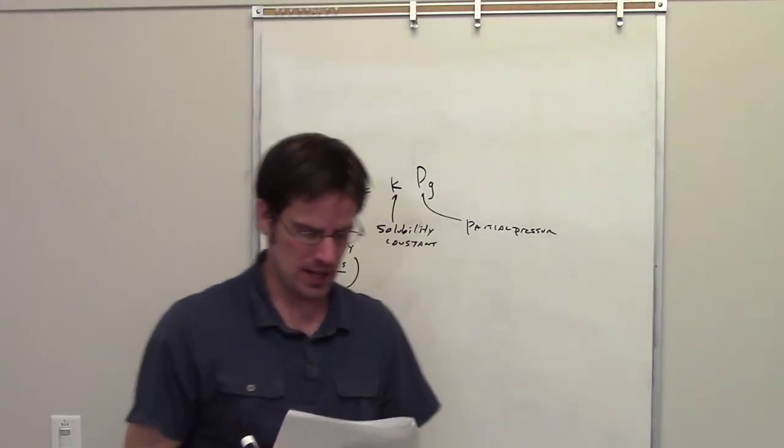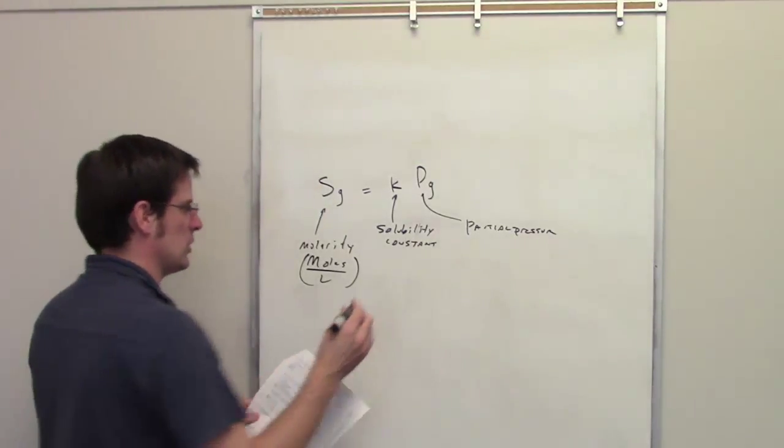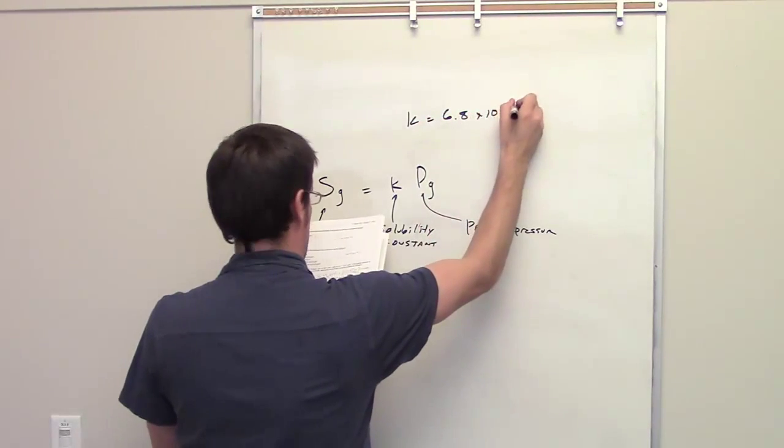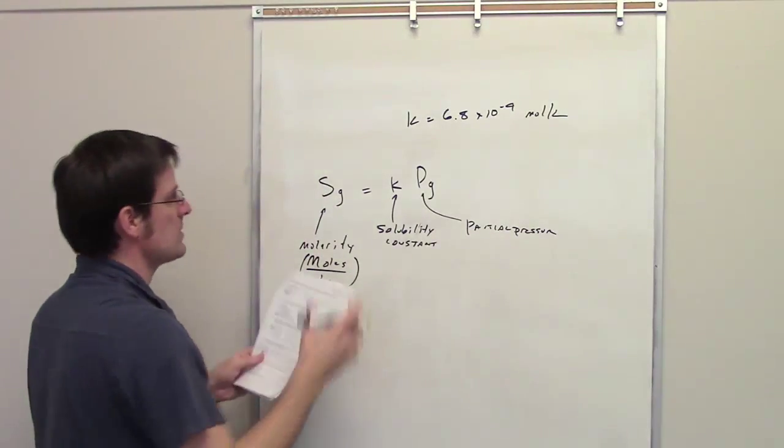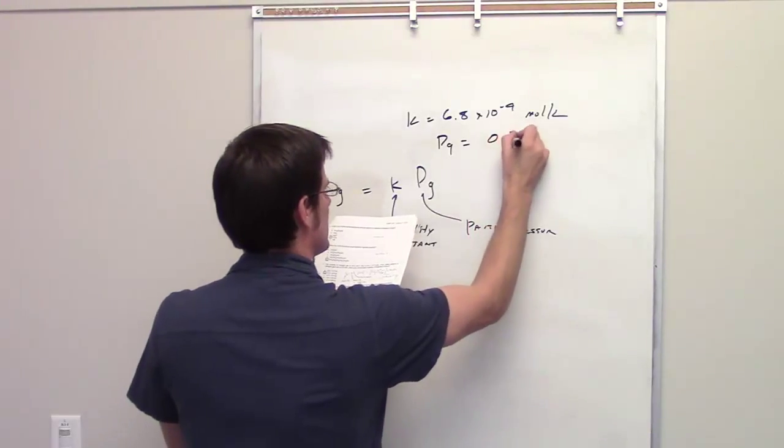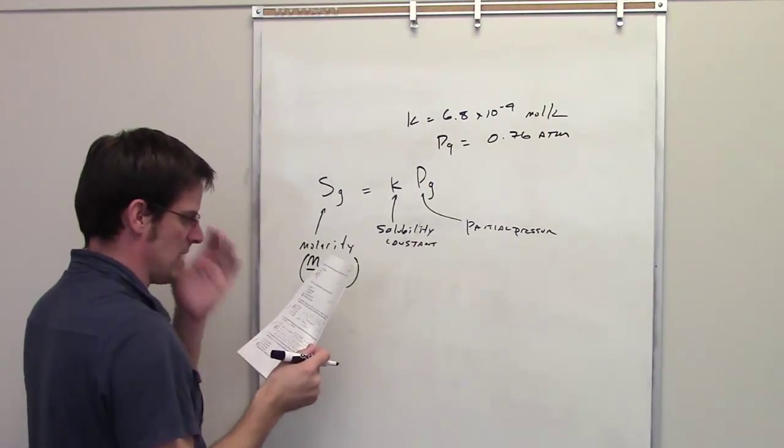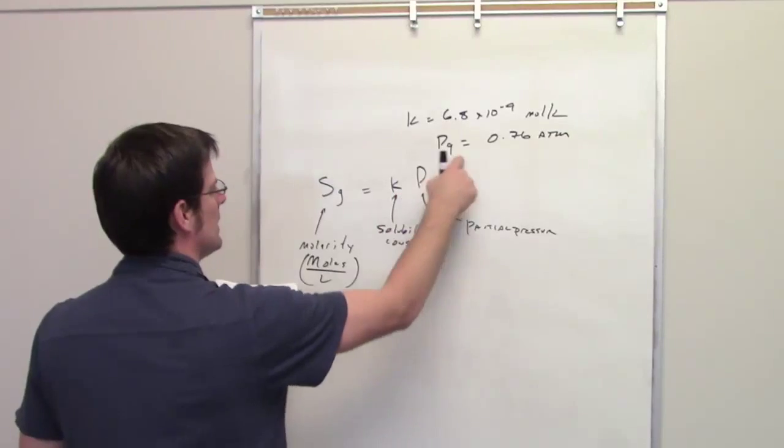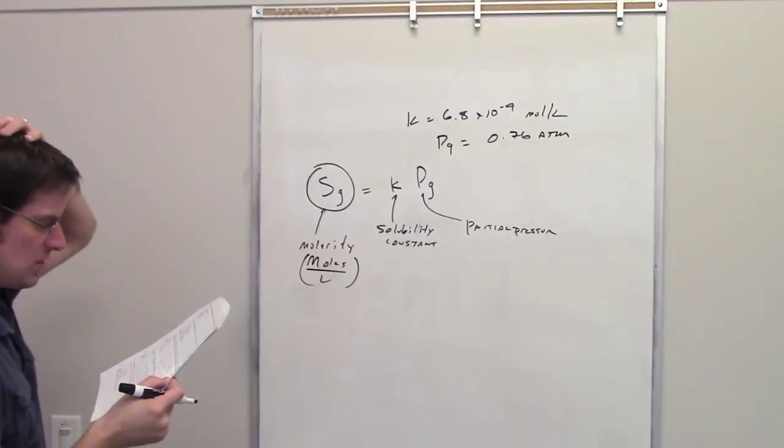So in this question, it tells us that the solubility of nitrogen gas at 25 degrees Celsius in one atmosphere pressure is equal to 6.8 times 10 to the negative fourth moles per liter. It tells us also that the partial pressure P sub G is equal to 0.76 atmospheres. It then asks, what is the concentration? So in other words, it gives us K, gives us P sub G, and asks us to solve for the concentration, that is, the molarity.